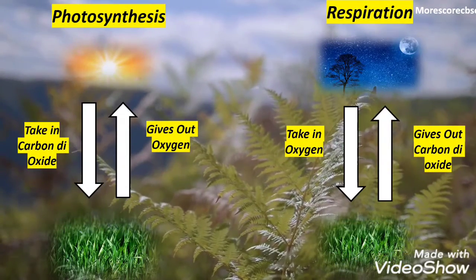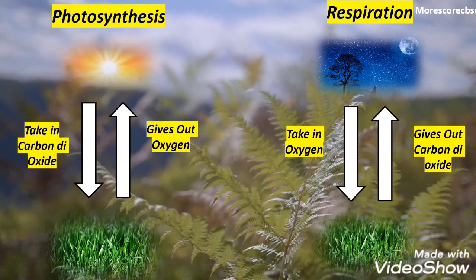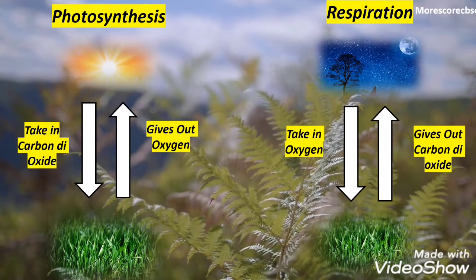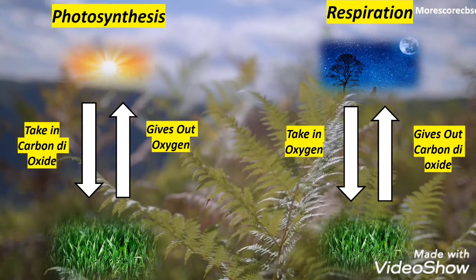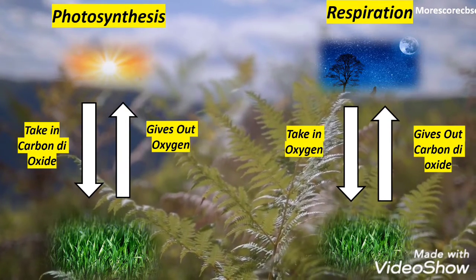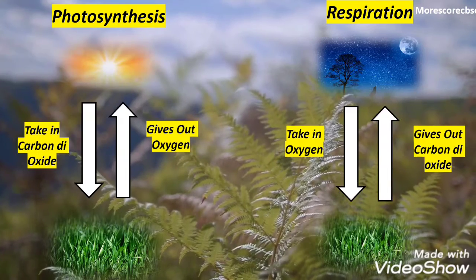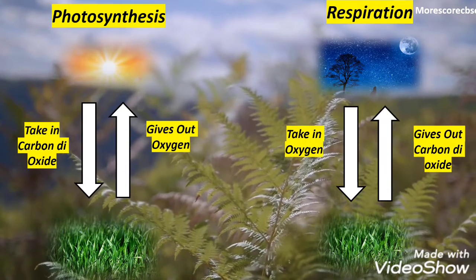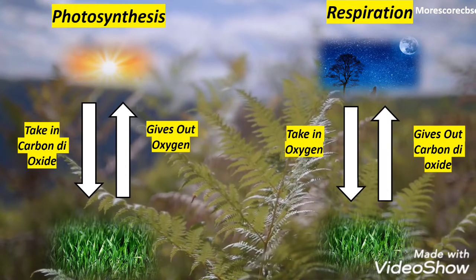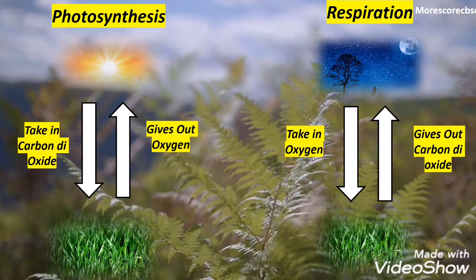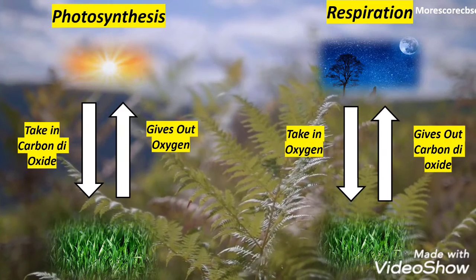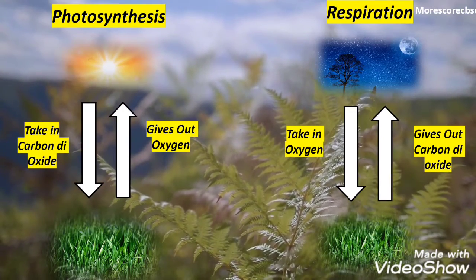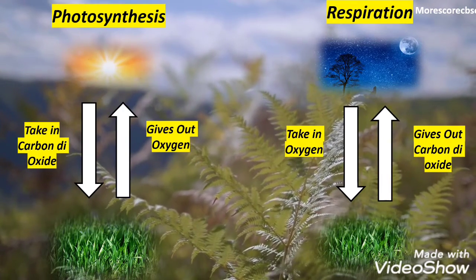Next, an interesting question: what happens during day and night in plants? During the day, there is sunlight, so the plants take in carbon dioxide and release oxygen. This process is called respiration.